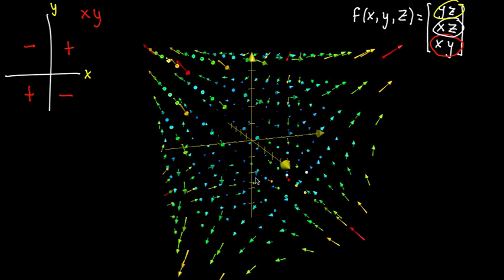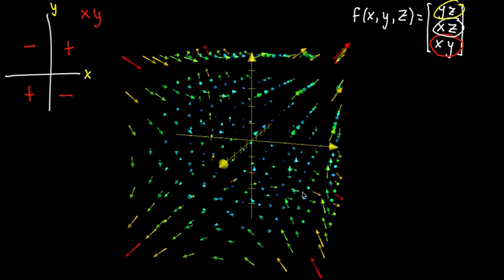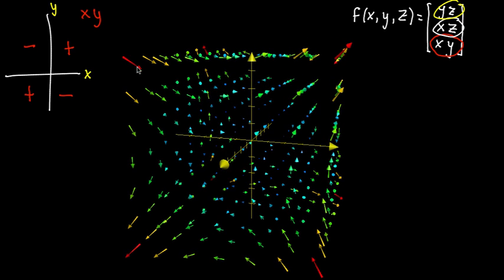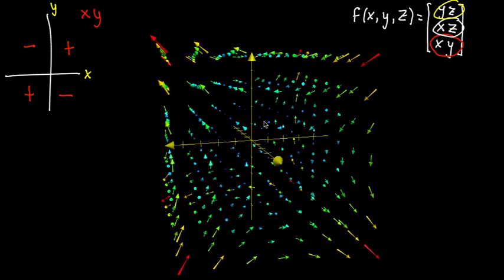And just like with two-dimensional vector fields, a kind of neat thing to do is imagine that this represents a fluid flow. So imagine like maybe air around you, flowing in towards the origin here, flowing out away from the origin there, you know, it would kind of be rotating around here.